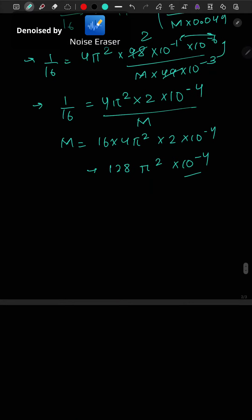The value of magnetic moment is x into 10 to the power minus 5. So x will be equal to 128π² into 10 to the power minus 4 divided by 10 to the power minus 5, so this will be 1280π². Answer.